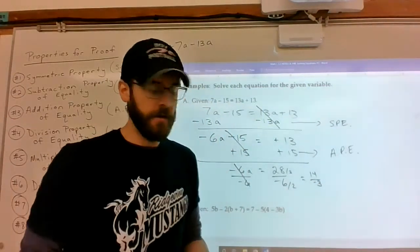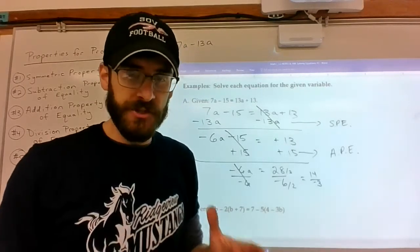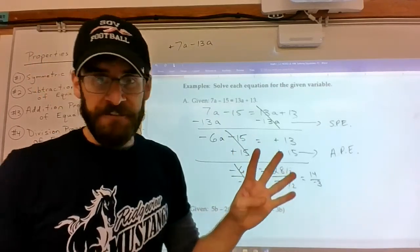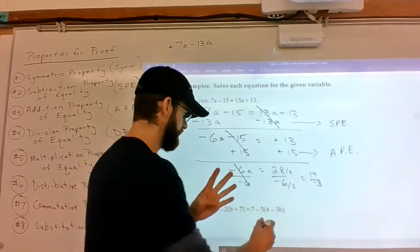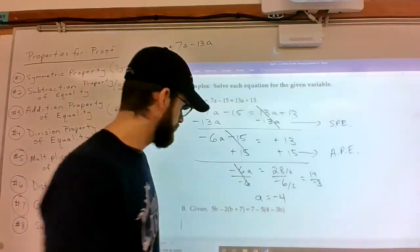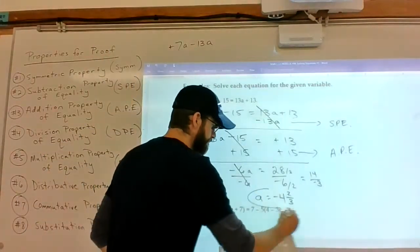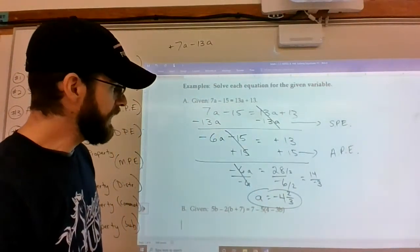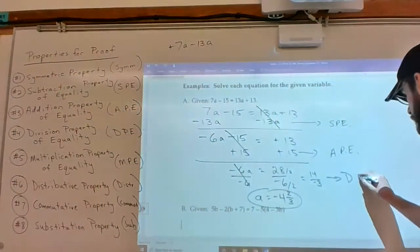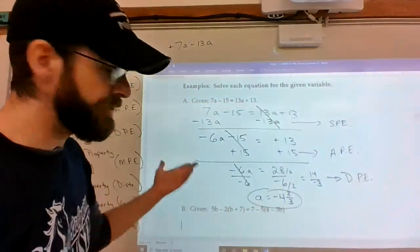And on this assignment, I want you guys to actually convert that into a mixed number. So you're asking yourself, how many times does 3 go into 14? 3, 6, 9, 12. 15 would be one too many, so it's 4, and then there's 2 leftovers. So I want to make sure I documented that I divided by negative 6 using the division property of equality. And I'm done with the first example.